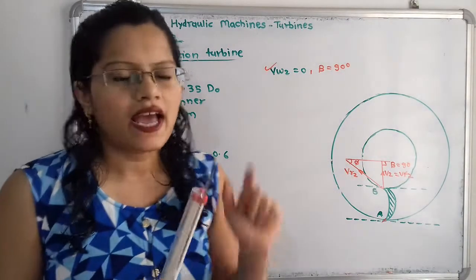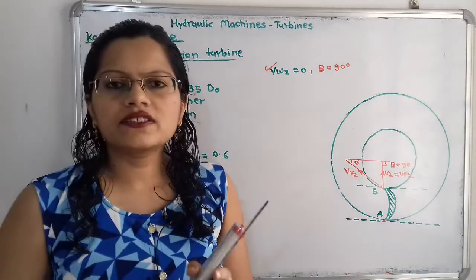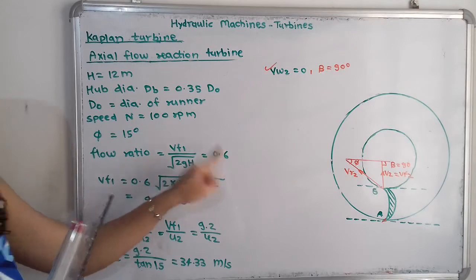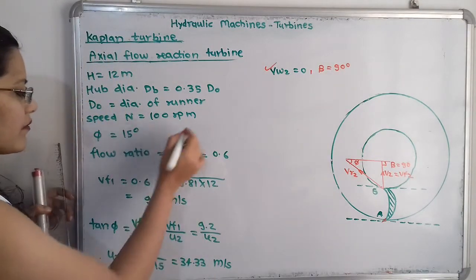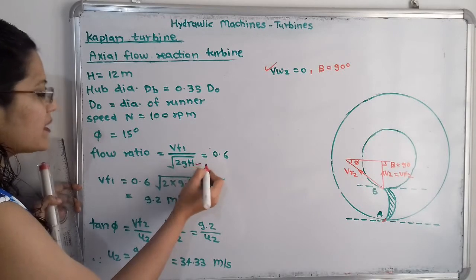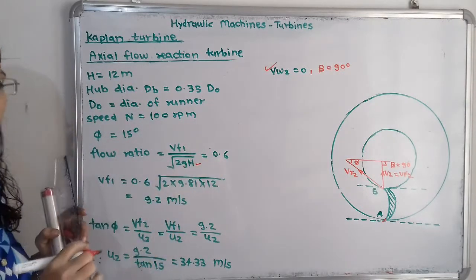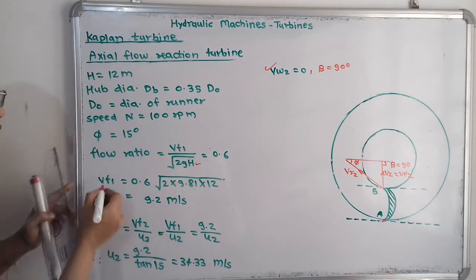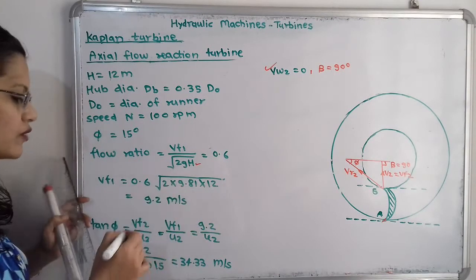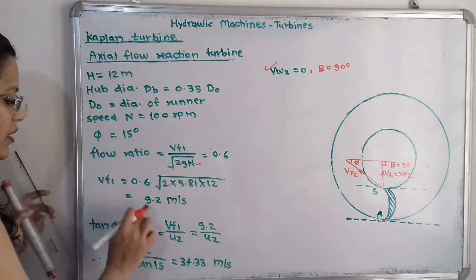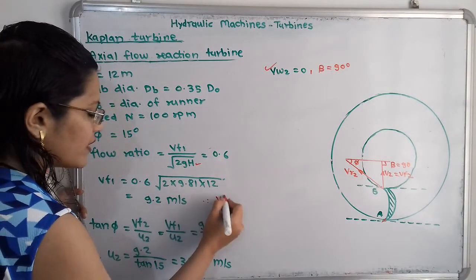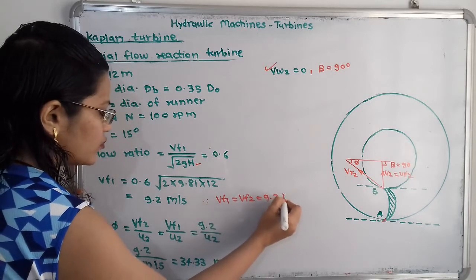The flow ratio formula is vf1 / √(2gH) = 0.6. With H = 12 m and g = 9.81, we calculate vf1 = 0.6 × √(2 × 9.81 × 12) = 9.2 m/s. Since for the Kaplan turbine vf1 = vf2, we have vf1 = vf2 = 9.2 m/s.